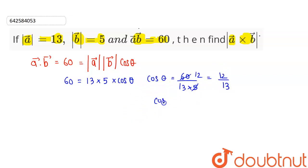So cos theta is 12 by 13. Now according to the formula of sin square theta plus cos square theta that is equal to 1, sin theta can be written as under root of 1 minus cos square theta. So this will be 12 by 13 whole square.